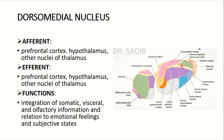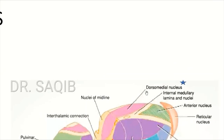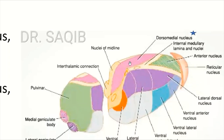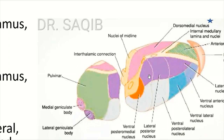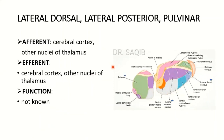The dorsomedial nucleus is a large nucleus connected to all the other nuclei of the thalamus. Afferents come from the prefrontal cortex, hypothalamus, and other nuclei of the thalamus. Efferents go to the prefrontal cortex, hypothalamus, and other thalamic nuclei. Its function is the integration of somatic, visceral, and olfactory information in relation to emotional feelings and subjective states.